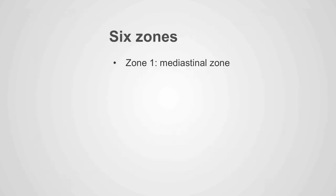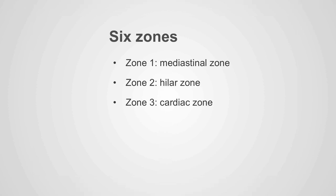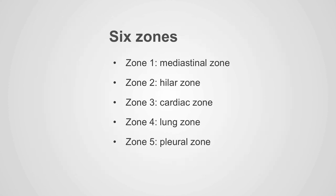Six zones are described on the PA and lateral chest x-rays: the mediastinal zone, the hilar zone, the cardiac zone, the lung zone, the pleural zone, and the peripheral zone.